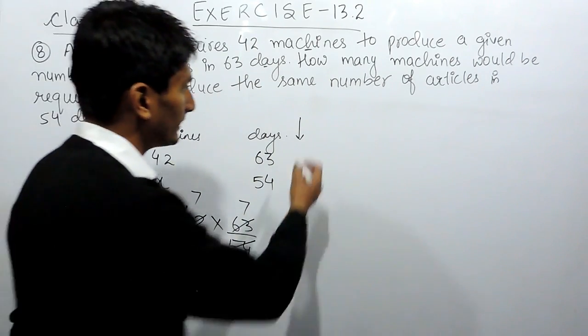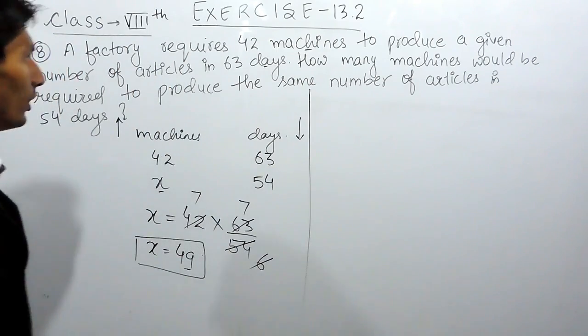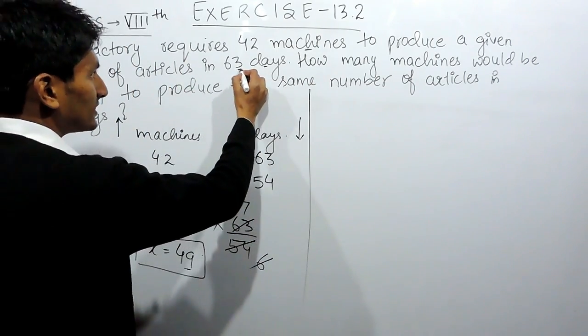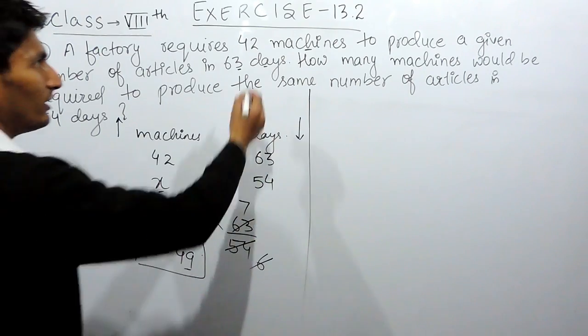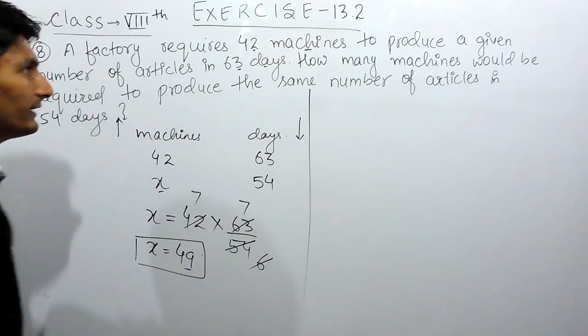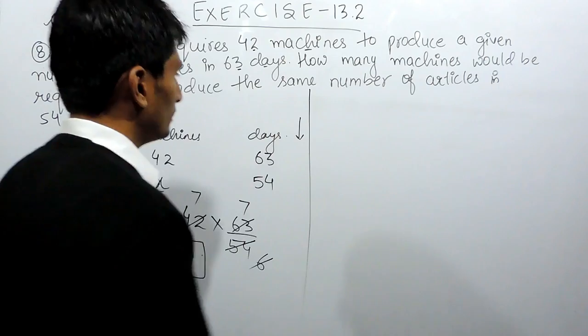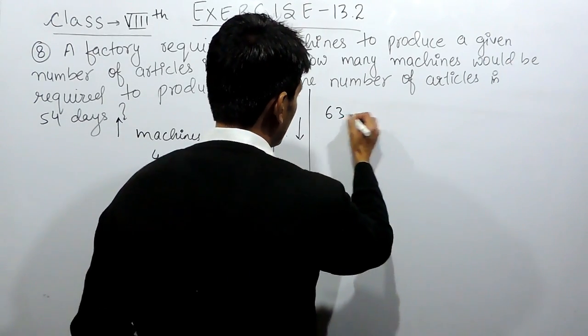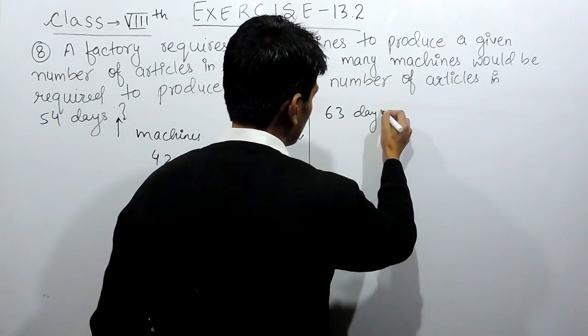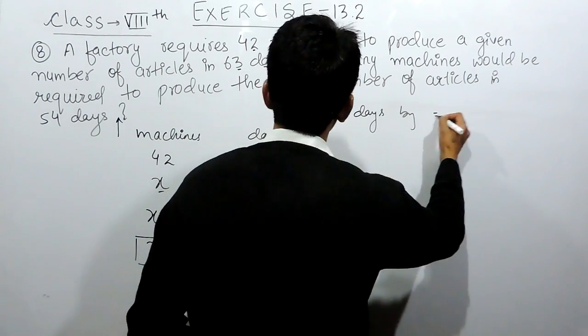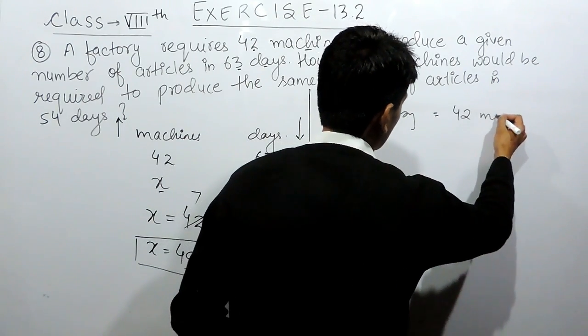There could be another method. Now, it is given that 63 days are taken by 42 machines to complete this work. So 63 days are taken by 42 machines.